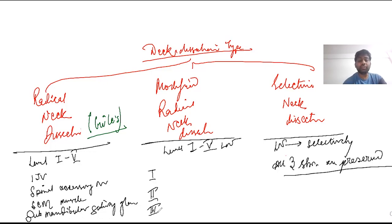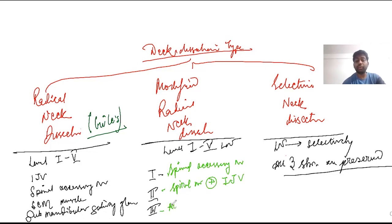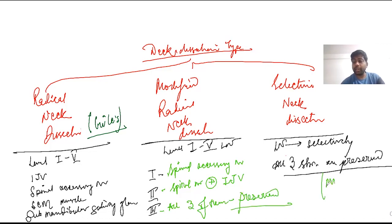In MRND type 1, we preserve the spinal accessory nerve. In type 2, we preserve two structures: the spinal accessory nerve plus the internal jugular vein, while removing the sternocleidomastoid. In type 3, we preserve all three structures. Selective neck dissection resembles MRND type 3 but additionally does not remove all lymph node stations from 1 to 5.